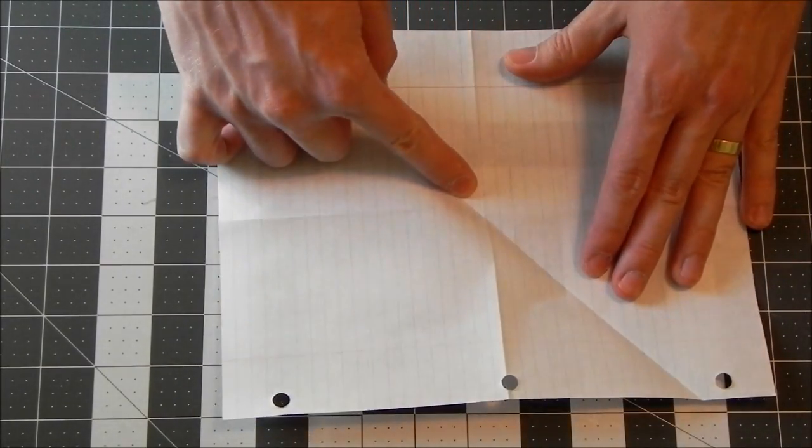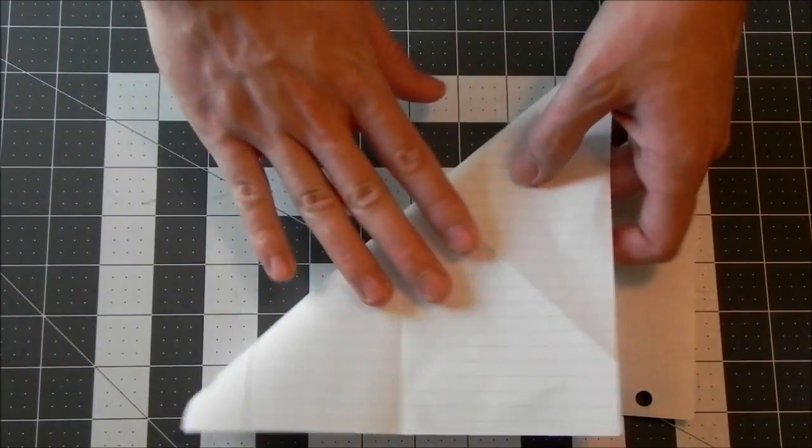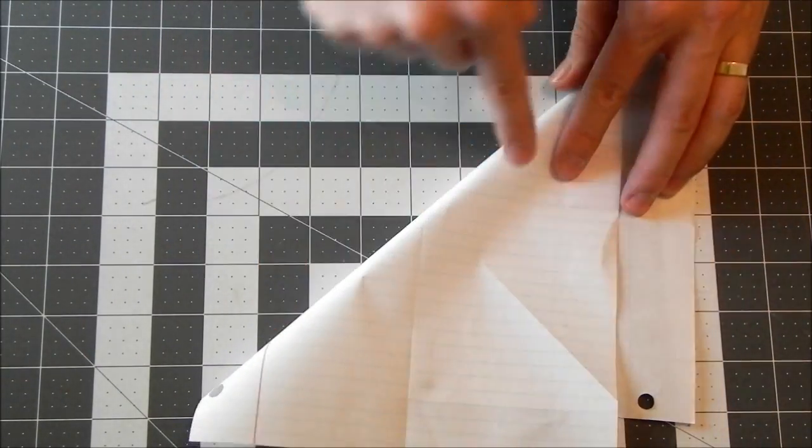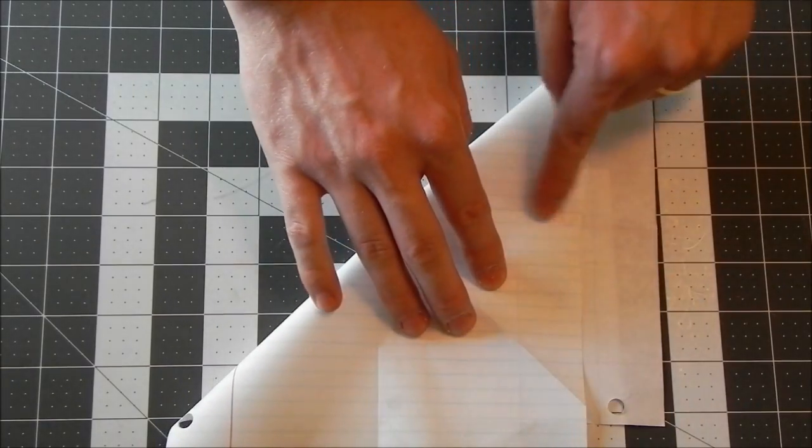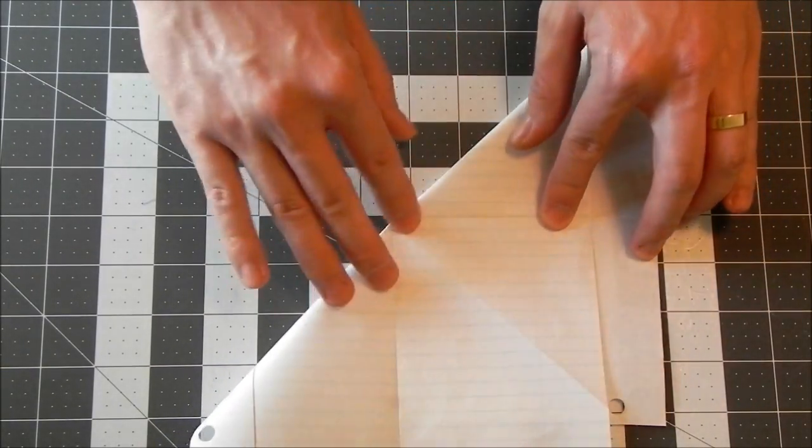You can see it's going through the center of the page there. And we'll do it the other way. And again, you can use the fold from before and just line it up to make sure that you have everything nice and even.